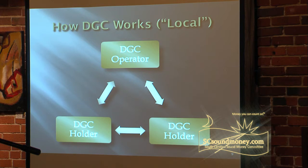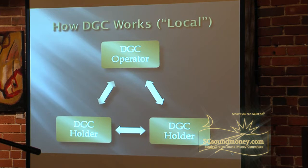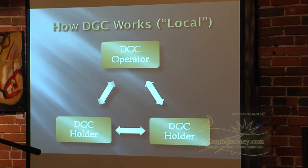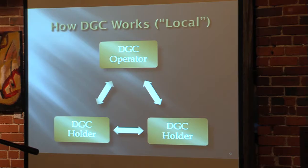How does DGC work at a local level? You basically have somebody that's going to issue the digital gold currency — somebody responsible for providing a platform for the transfer of gold value for all the participants. I call that person the DGC operator. They're the ones that have to arrange to have the metal stored and provide a software platform for the exchange of that metal value to happen. Working with the operator are the various digital gold currency holders — people like you and me that want to transact with gold with each other in an easy way through the DGC operator.